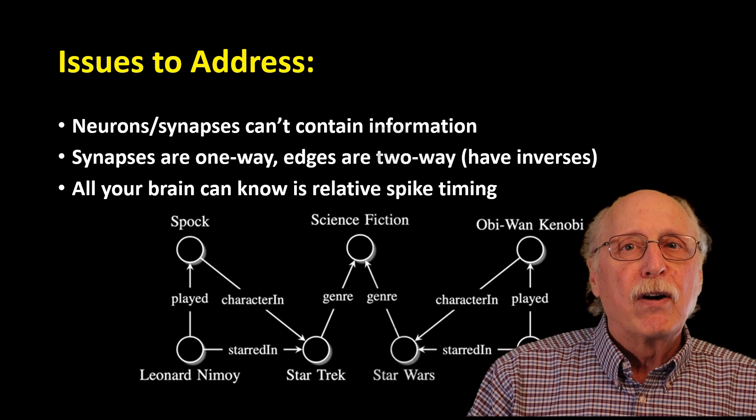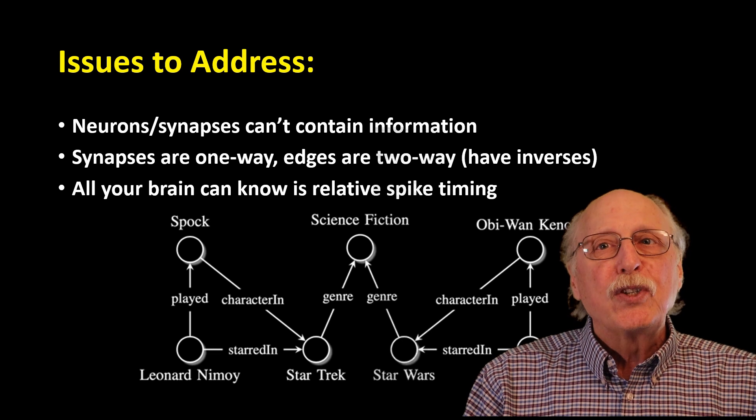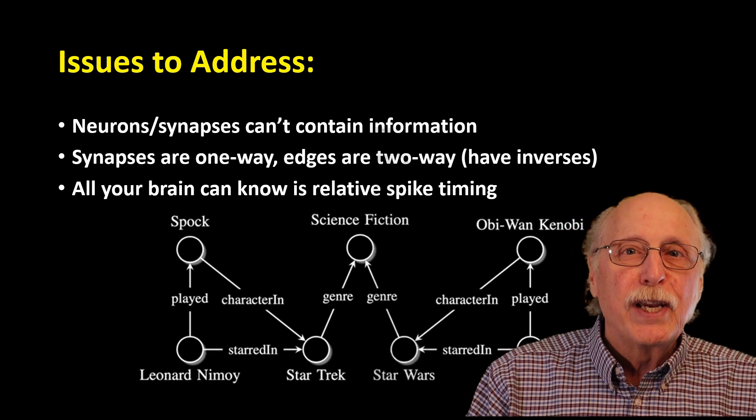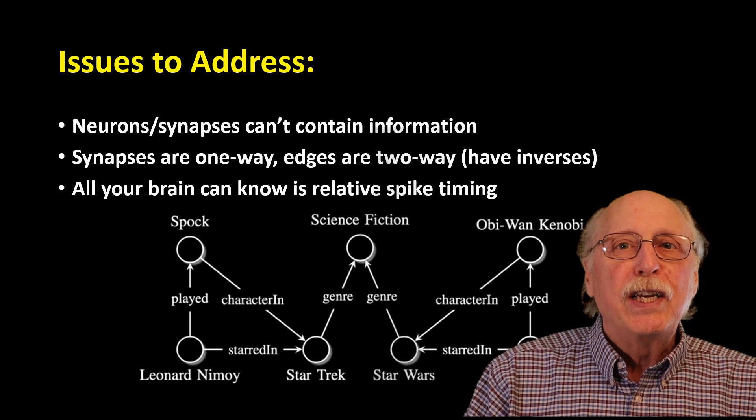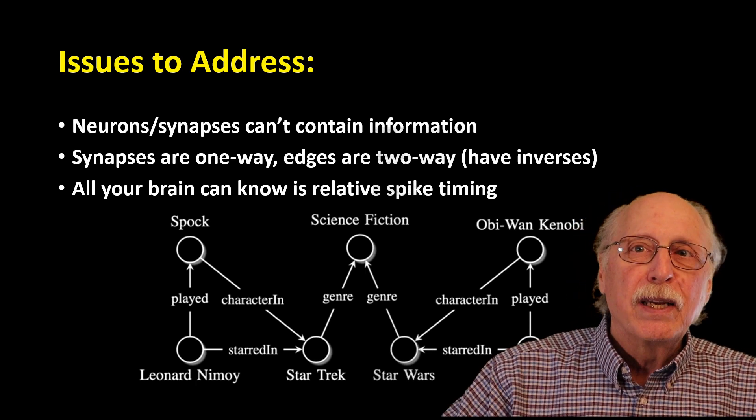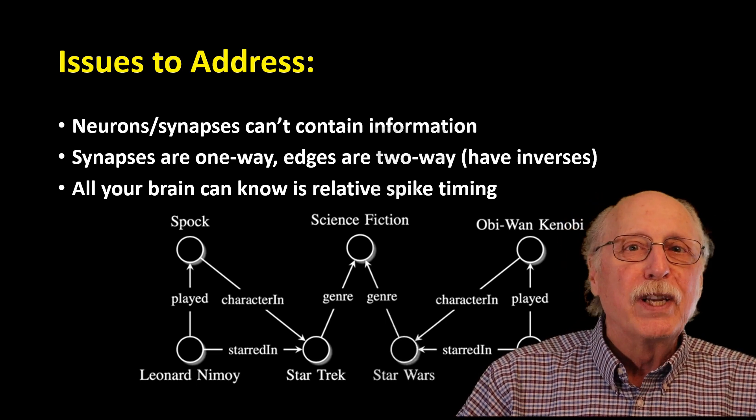On the other hand, there are a few significant differences. Neurons and synapses can't contain information, they just spike. In a computer we can attach text to any node or edge to give it meaning. In the brain you can't do that, so all the meaning must be inferred from the neural connections.